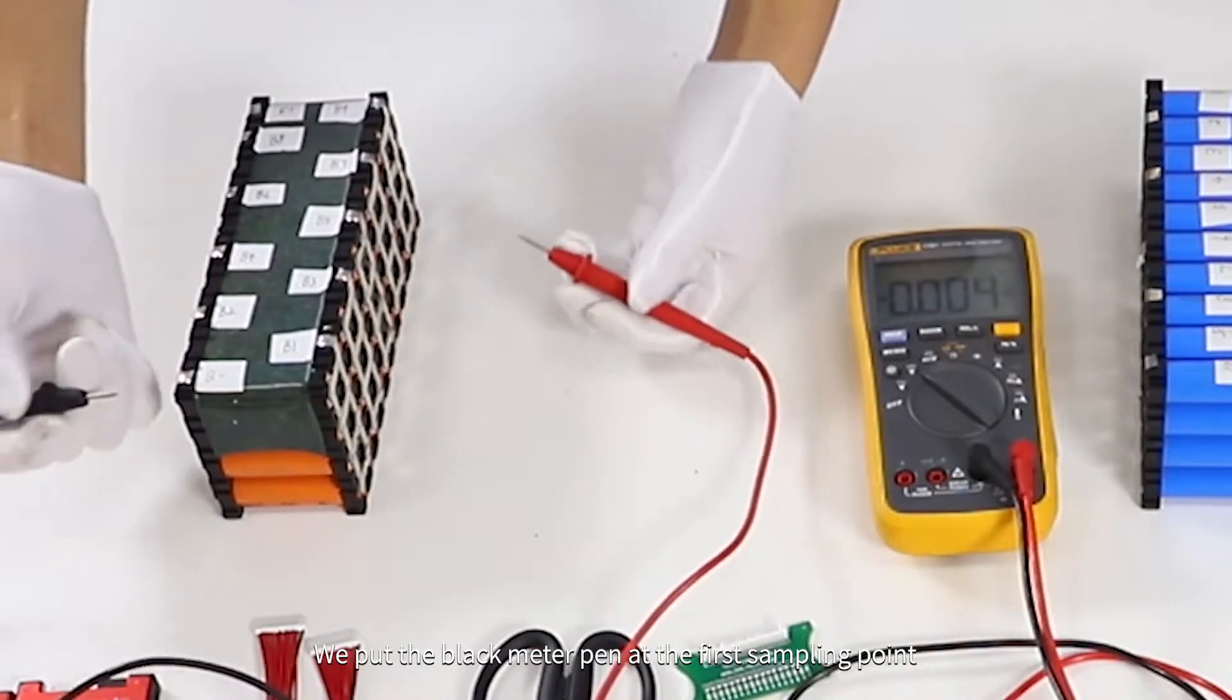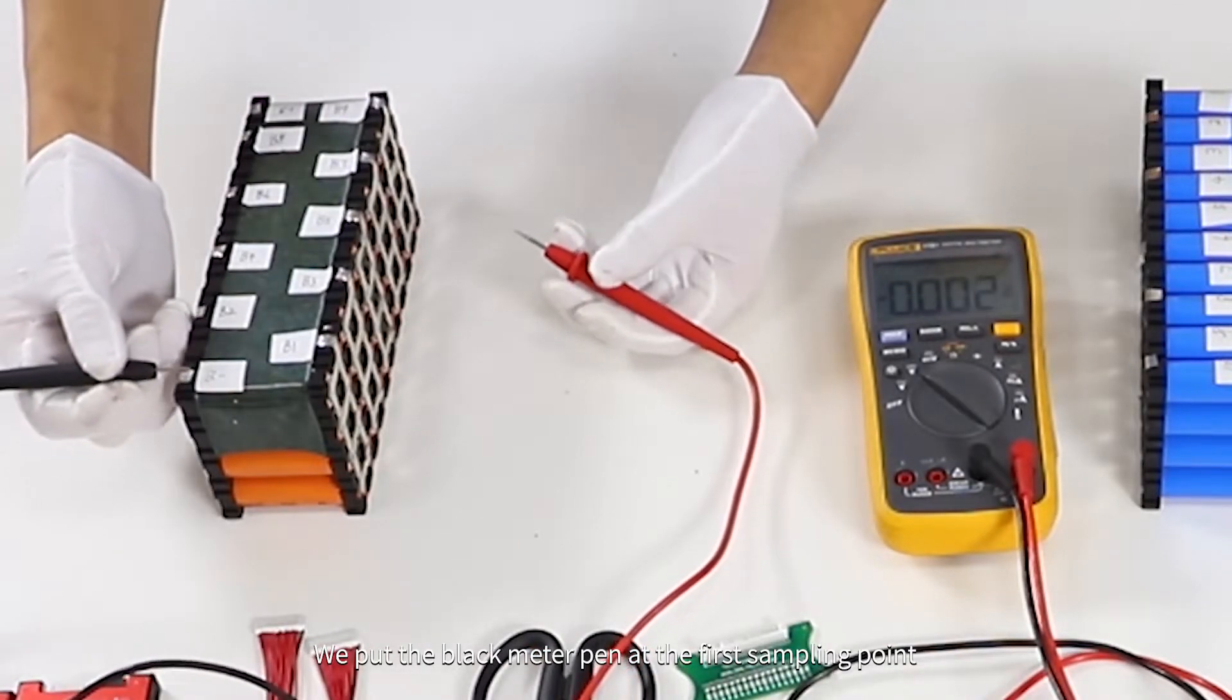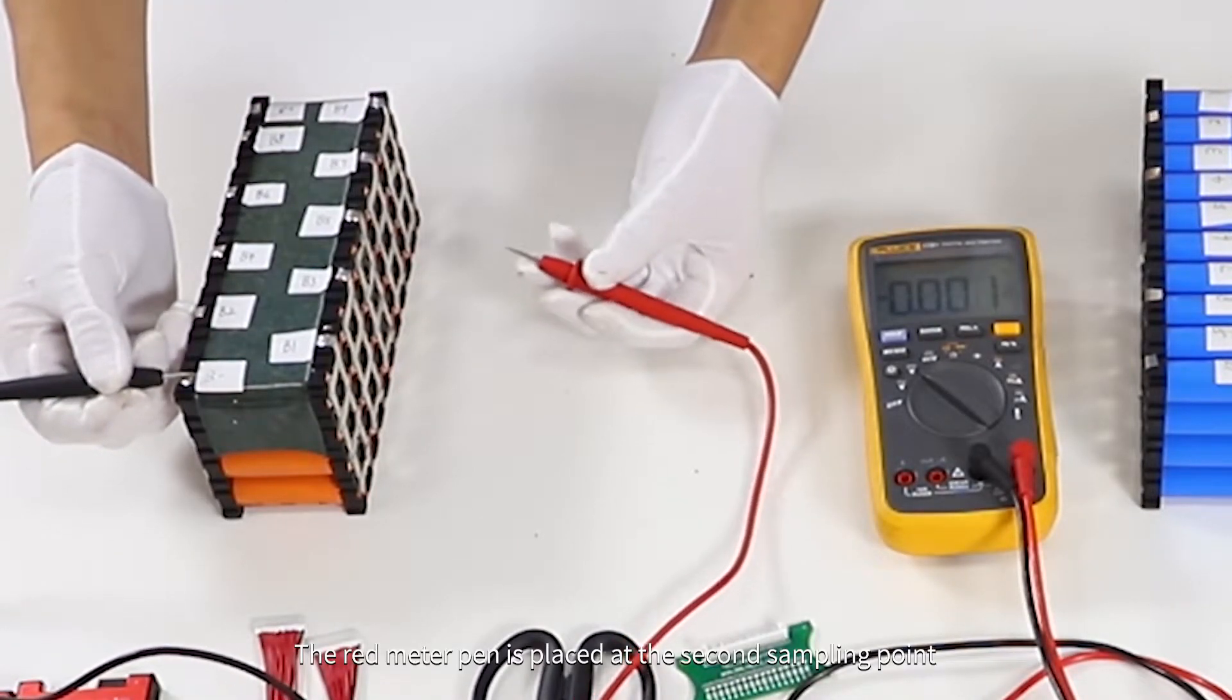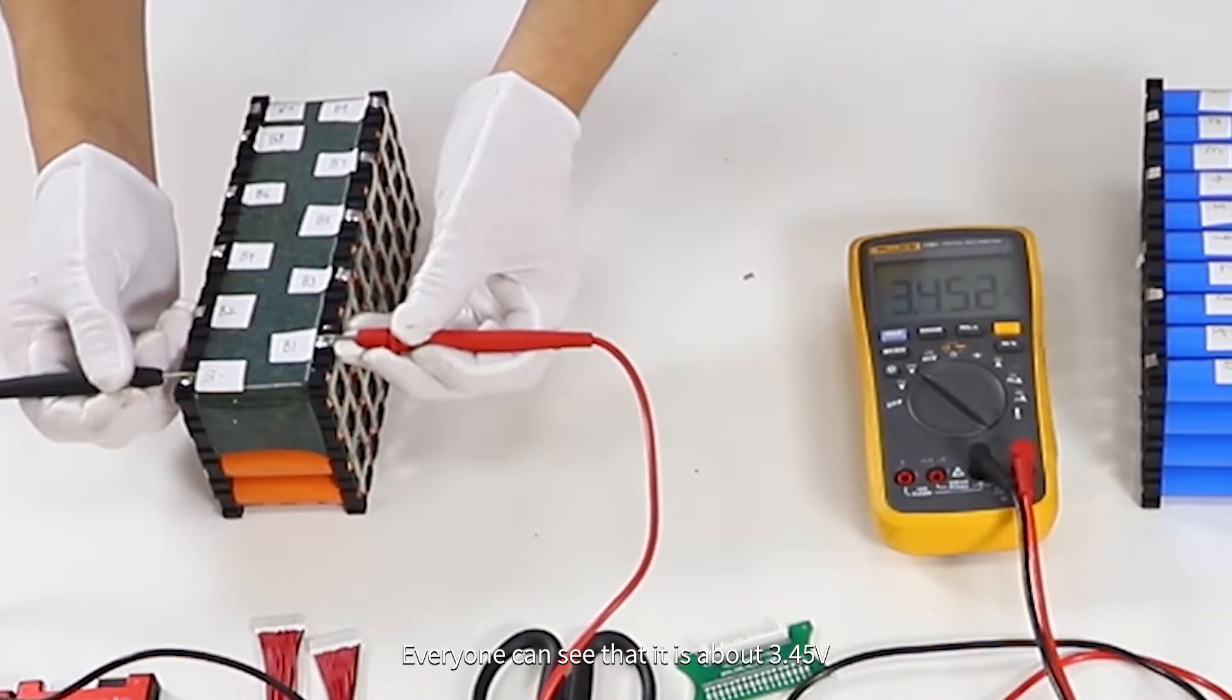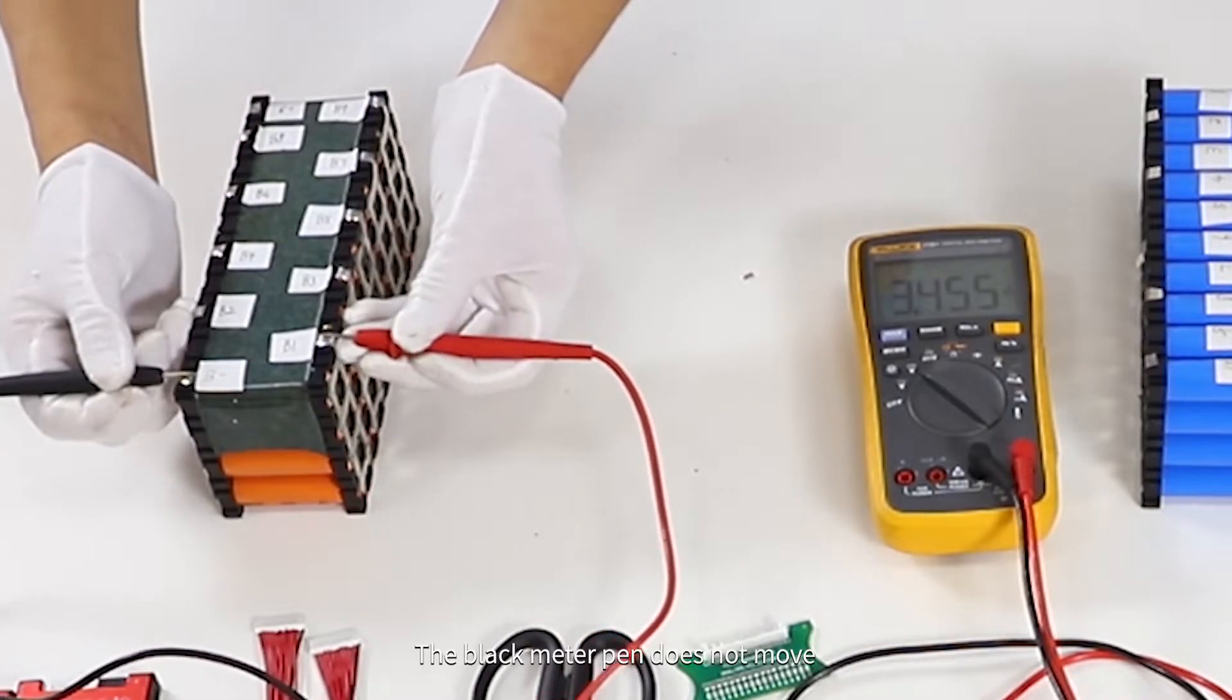We put the black meter pen at the first sampling point. The red meter pen is placed at the second sampling point. Everyone can see that it is about 30.45V.